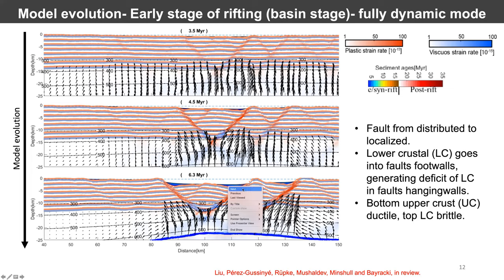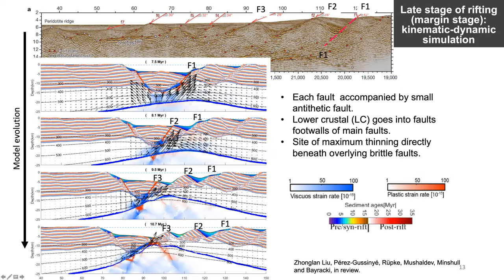At this stage, we have reached a crustal thickness in the model similar to that observed in our target seismic profile, and we start to impose the faults that we see in the seismic profile. The main point here is that the lower crust flows always towards the footwall of the main active faults, and this results in maximum crustal thinning occurring underneath the overlying brittle faults.